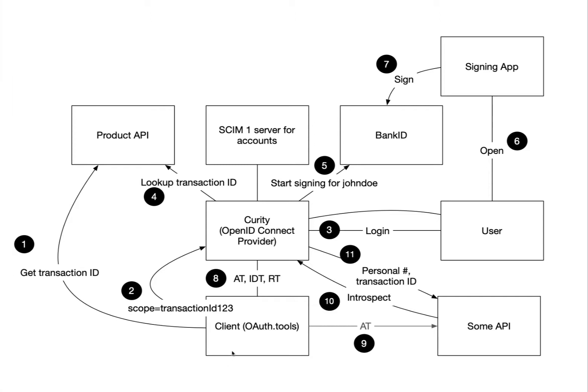In this scenario we have a client application which is OAuth tools. This is going to make a call out to some sort of transaction API or product API for a product that wants to be purchased by the end user. That will return a transaction ID — like number 1 or 2 — and we're going to append that to a prefix scope. That will then be sent in the normal OAuth authorization request, and after the user logs in we're going to look up that transaction ID in the product API and turn that into some text to be displayed to the user for them to sign the transaction.